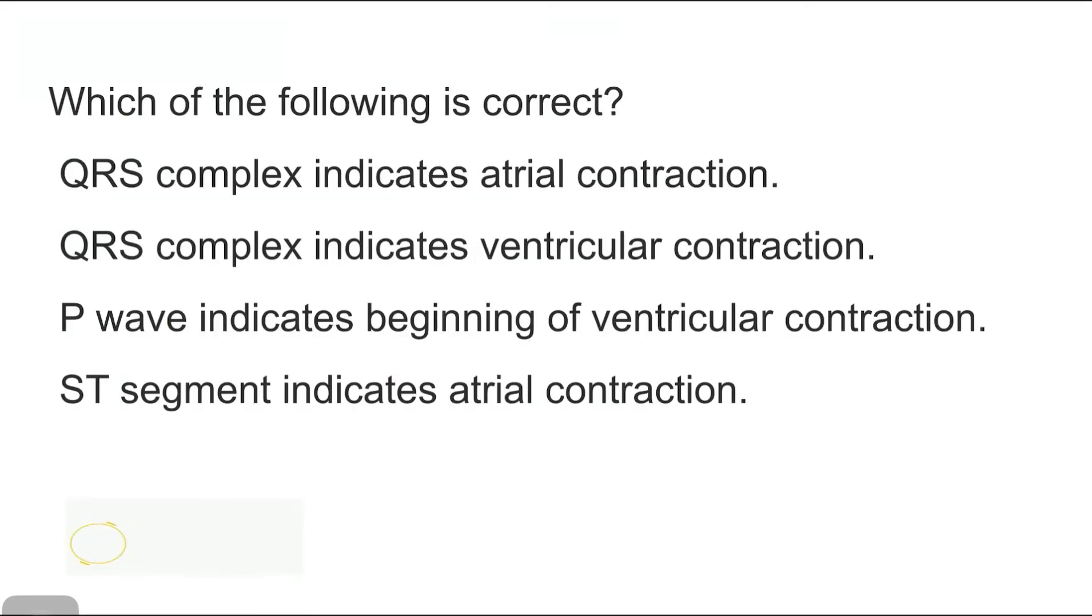Next question is which of the following is correct. QRS complex indicates atrial contraction. QRS complex indicates ventricular contraction. P wave indicates beginning of ventricular contraction. ST segment indicates atrial contraction. So first we have to know that P, Q, R, S, T are the waves. P waves are produced due to atrial depolarization or atrial contraction. QRS complex is produced due to ventricular depolarization or ventricular contraction. T wave is produced due to ventricular relaxation or ventricular repolarization.